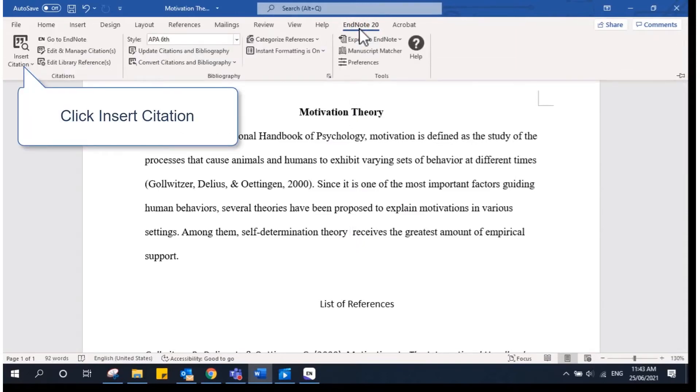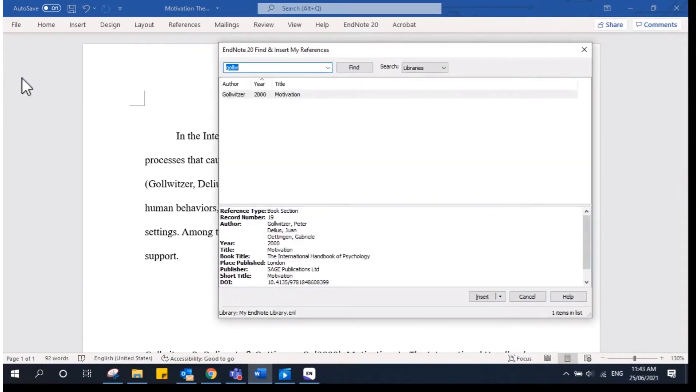Click Insert Citation. Search for the citation, then Insert.